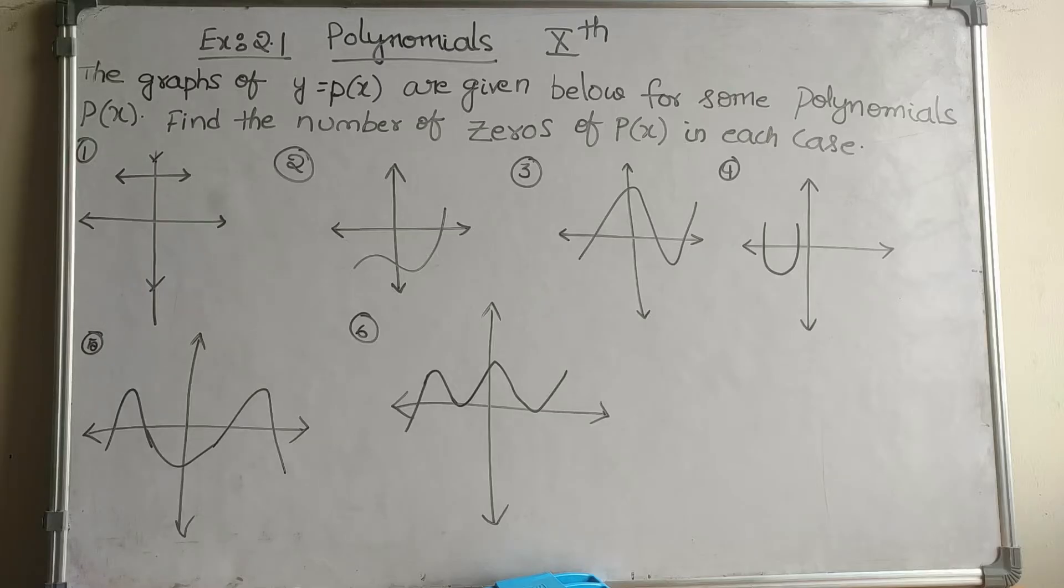10th class CVC second chapter, polynomials exercise 2.1, first question: The graphs of y = p(x) are given below for some polynomials p(x). Find the number of zeros of p(x) in each case.